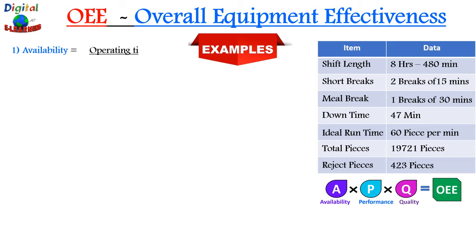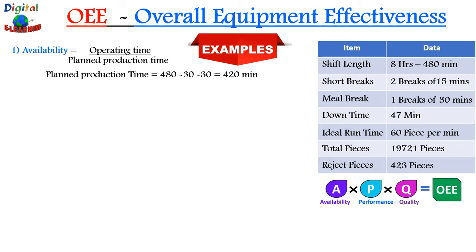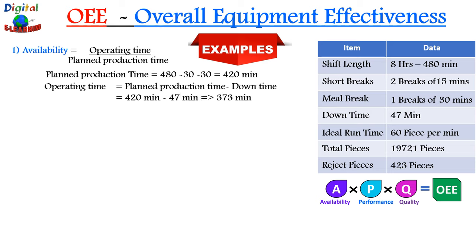Availability is given by operating time divided by planned production time. Planned production time equals total shift length of 480 minutes minus 2 short breaks totaling 30 minutes, minus 1 meal break of 30 minutes — giving us 420 minutes. Operating time equals planned production time minus downtime: 420 minus 47 equals 373 minutes. So availability is 373 divided by 420, which gives 88.81%.